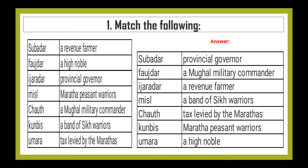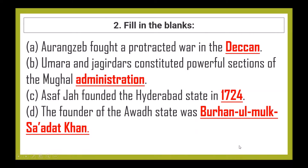The first question is: Match the Following. Part A to Part B answers: Subedar — Provincial Governor; Faujdar — Mughal military commander; Ijaradar — a revenue farmer; Misl — a band of Sikh warriors; Kunbis — Maratha peasant warriors; Umara — a high noble.